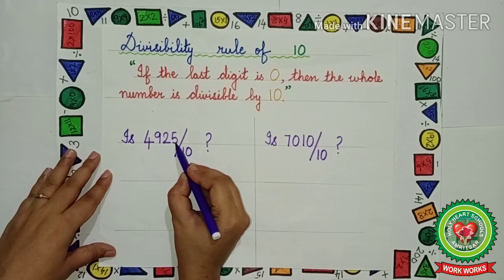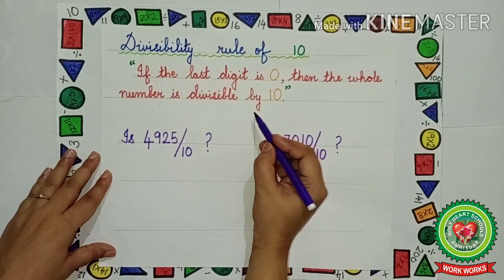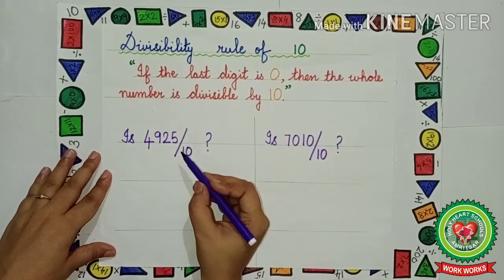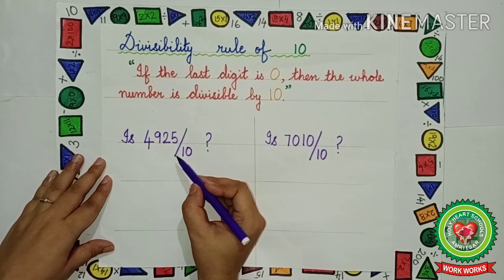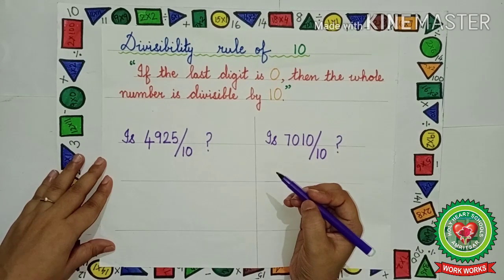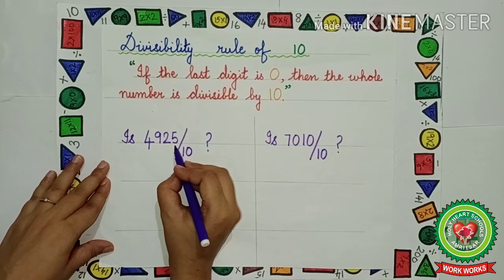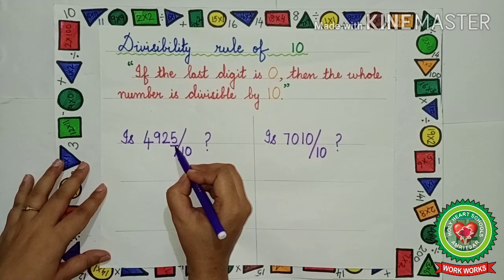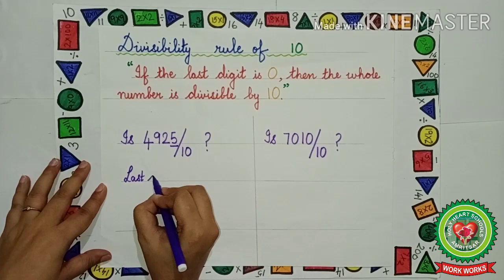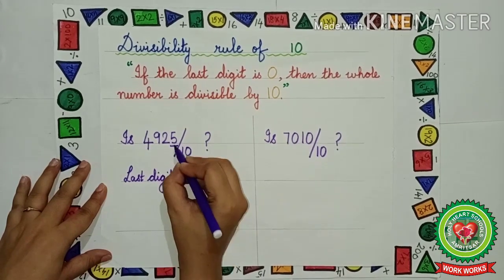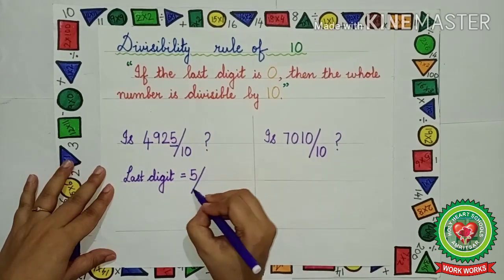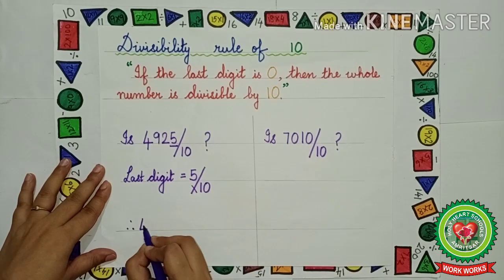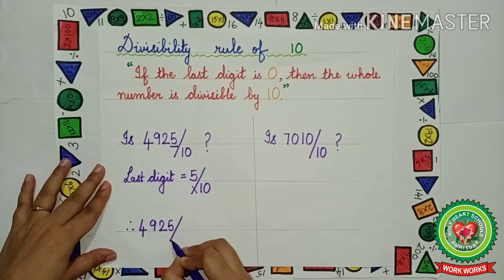Is 4925 divisible by 10? The rule of 10 says if the last digit is 0, then the whole number is divisible by 10. We just have to look whether the last digit is 0 or not. If the last digit is not 0, that means it is not divisible by 10. The last digit is 5, not 0, so it is not divisible by 10. Therefore, 4925 is not divisible by 10.